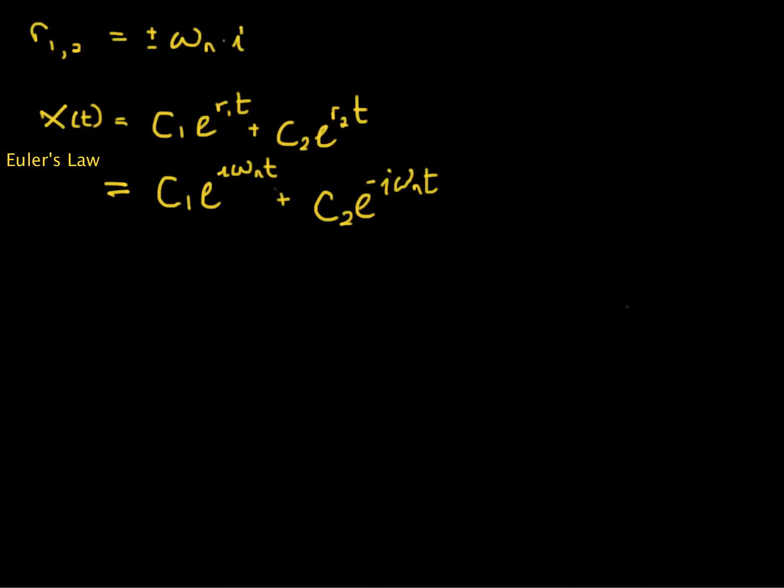Then using Euler's Law. Euler's Law, let me remind you, says that E to the i omega t is equal to cosine omega t plus or minus, depending on the sign, i sine omega t.